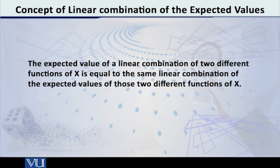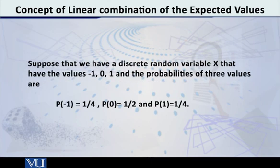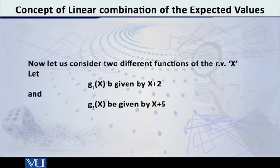So let me try to explain this to you with the help of a simple example. Suppose that we have a random variable x which has only three different values. It's a discrete variable and the three values are minus 1, 0 and 1. And the probabilities of the three values are 1 by 4, 2 by 4 and 1 by 4.